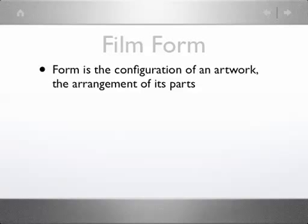A painting has different possibilities formally than a sculpture does, and film has different formal possibilities than either painting or sculpture or other forms of art. So form in general is how the parts of the artwork are arranged — how the artwork is configured or structured. Structure is one of the things that is part of when we're talking about film form.